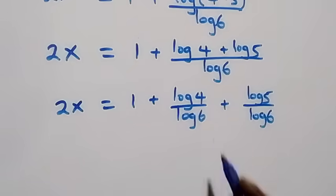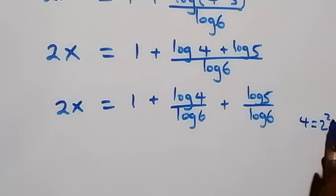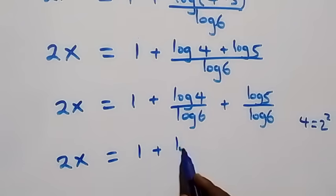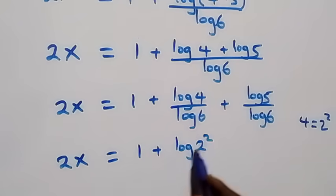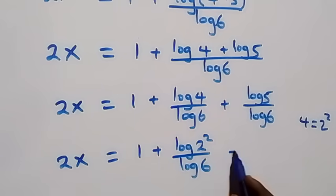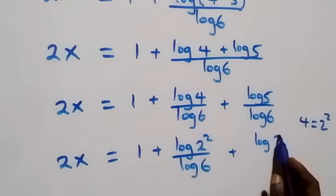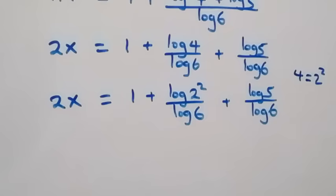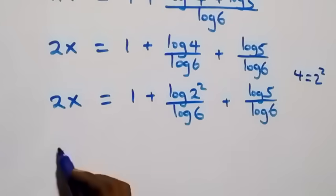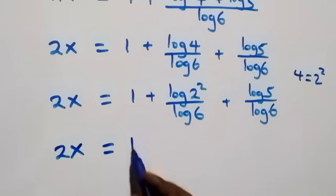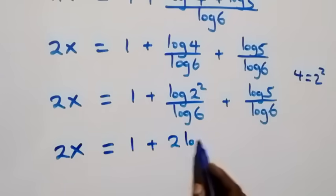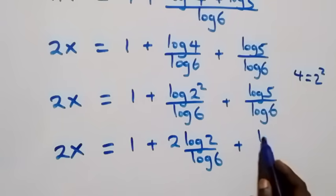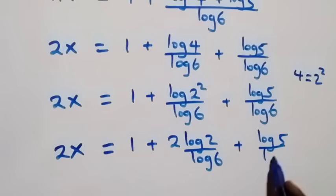From here we can write 4 as 2 squared, so what we have becomes 2x equals 1 plus log of 2 squared over log 6, plus log 5 over log 6. We then apply the power law of logarithm: the 2 comes down, giving 2x equals 1 plus 2 log 2 over log 6, plus log 5 over log 6.